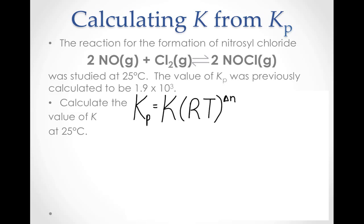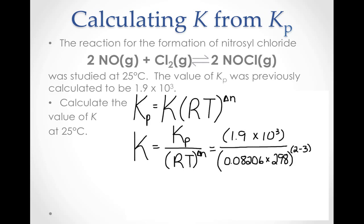If we rearrange this relationship to solve for the unknown K, then we get K equal to Kp divided by the quantity RT to the power of delta n. By substituting Kp, R, and T along with the difference between the total number of product moles, 2, and the total number of reactant moles, 3, we can calculate the value for K. K is equal to 4.6 times 10 to the fourth.